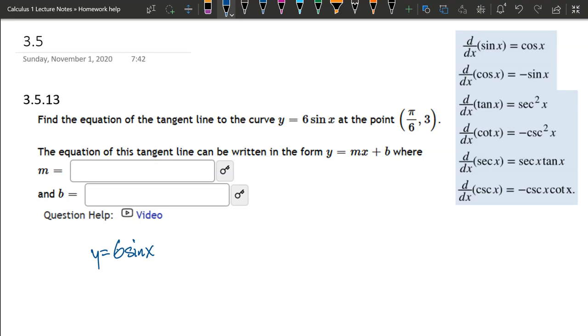We're going to look at finding the equation of a tangent line. Anytime you want to find a tangent line, you need the slope of your function, which we get by taking a derivative. Here's our function: y = 6sin(x).